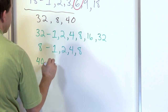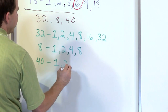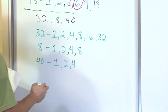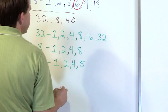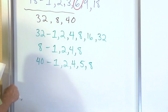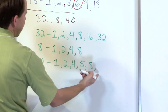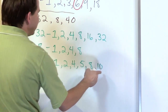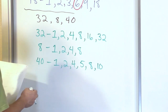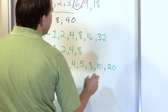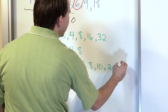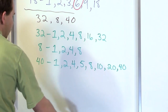And finally, the number 40: 1 divides in, 2 divides in, 3 does not, but 4 does because 4 times 10 is 40. The number 5 does because 8 times 5 is 40. 6 and 7 do not, but 8 does because 8 times 5 is 40. 9 doesn't divide in, but 10 does because 10 times 4 is 40. Continuing through the teens, nothing until 20, because 20 times 2 is 40. And the last factor is 40 itself.